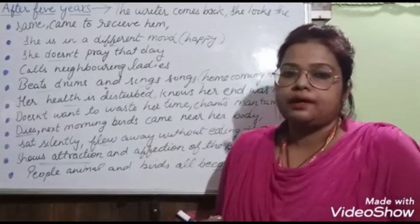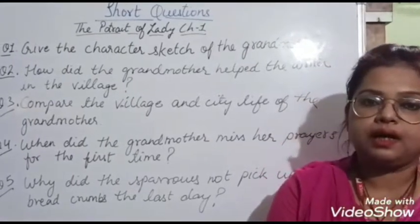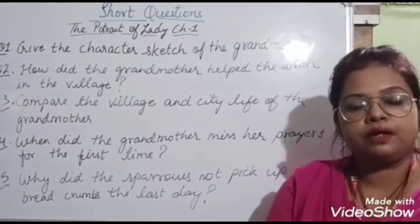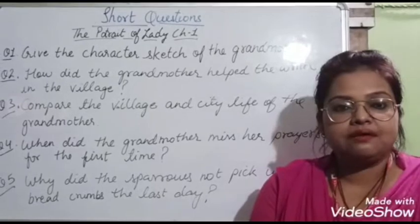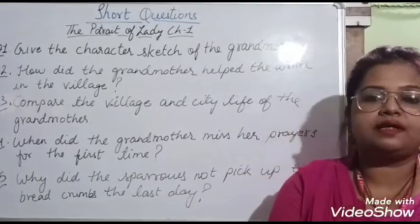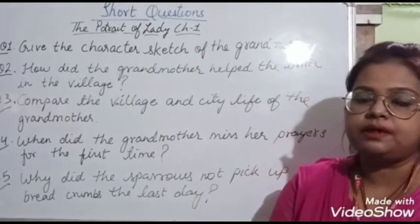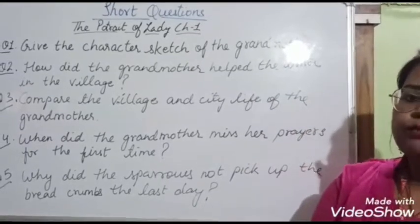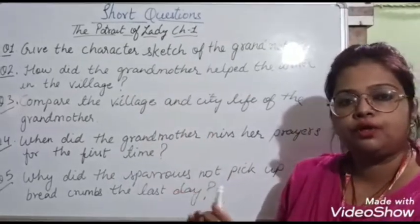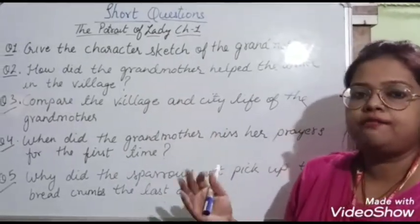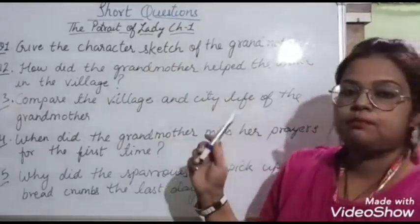I hope you have understood the story. The explanation of the chapter is now over. I have explained the main topics, points, and events of the chapter — The Portrait of a Lady — covering the main phases: the village phase, the city phase, the higher studies phase, and the circumstances of the grandmother's death.